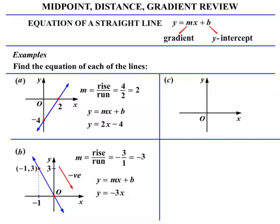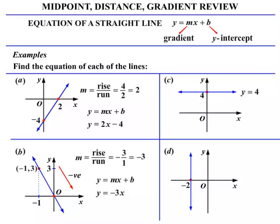In part C, we mark the point 4. If the line is horizontal, the equation is simply Y equals 4. In part D, we look at a vertical line. It hits the X axis at -2. The equation is simply X equals minus 2.